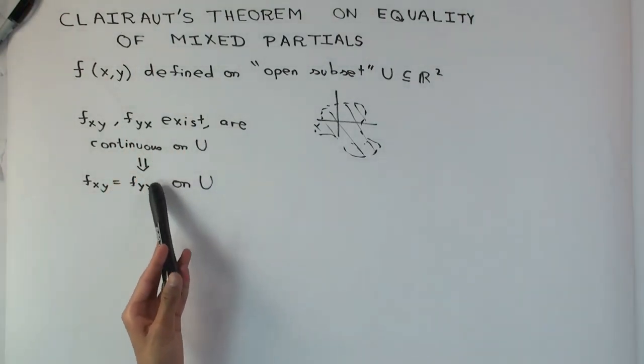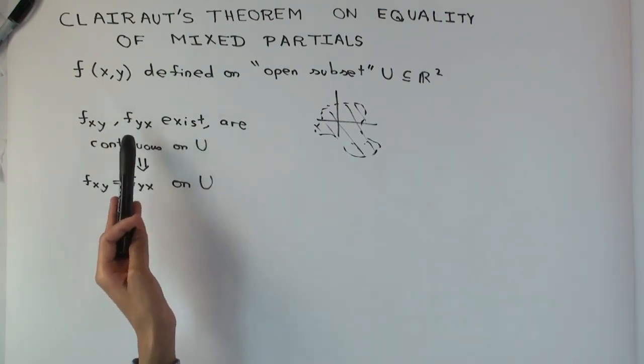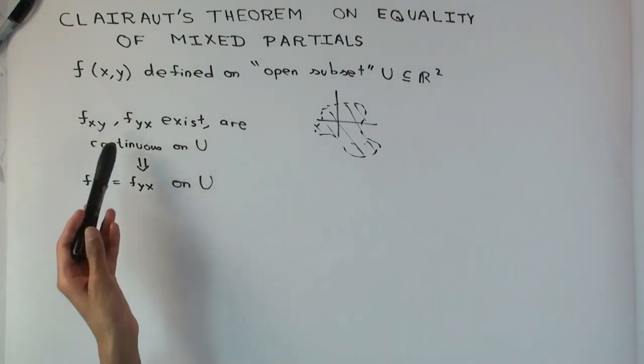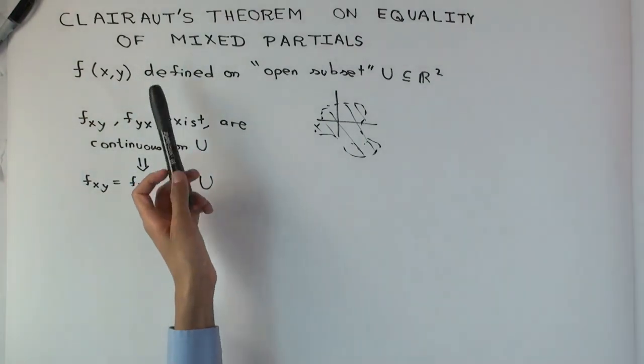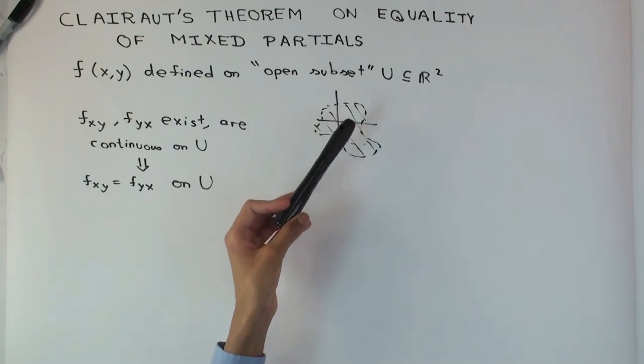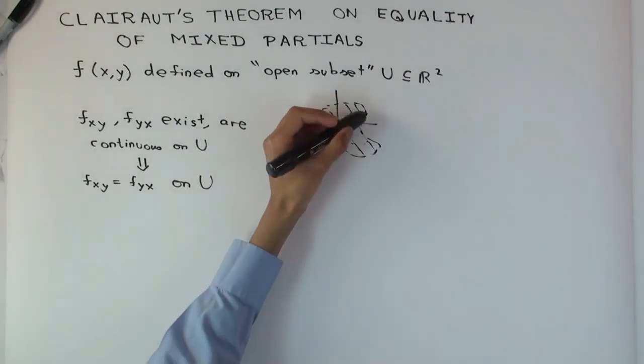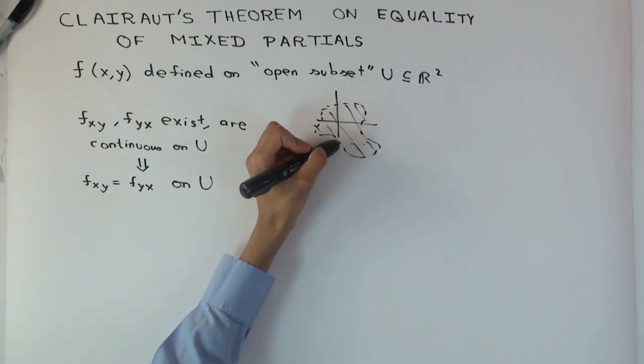These are sufficient conditions for the equality of mixed partials to hold. The result may hold even if these conditions don't hold, but this gives you sufficient conditions. Suppose f is a function defined on an open subset of R². Open means something which doesn't have any boundary issues.